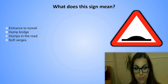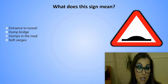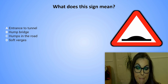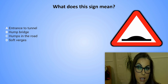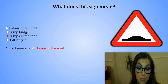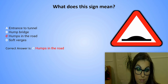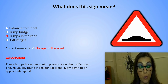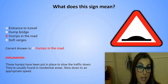What does this sign mean? A. Entrance to tunnel. B. Hump bridge. C. Humps in the road. D. Soft verges. The correct answer is C. Humps in the road. Explanation: These humps have been put in place to slow the traffic down. They are usually found in residential areas. Slow down to an appropriate speed.